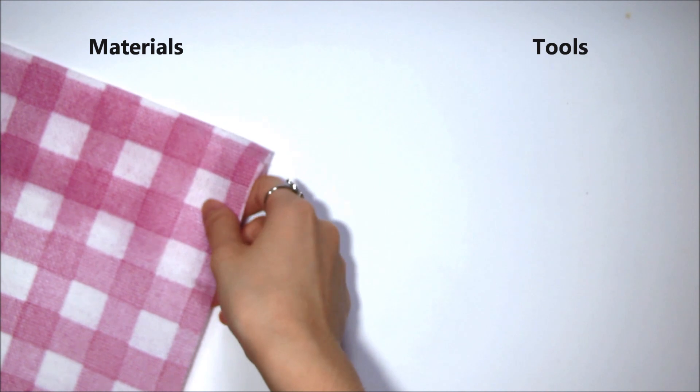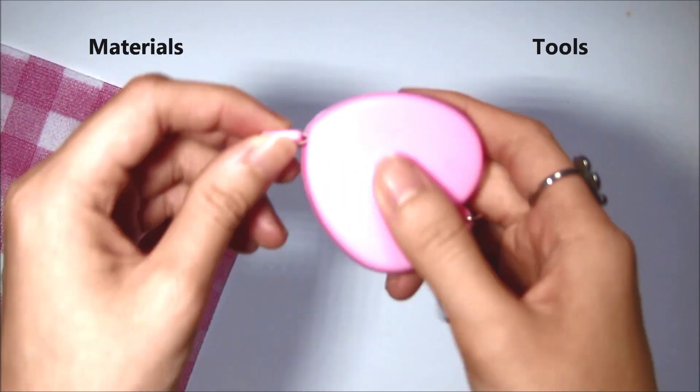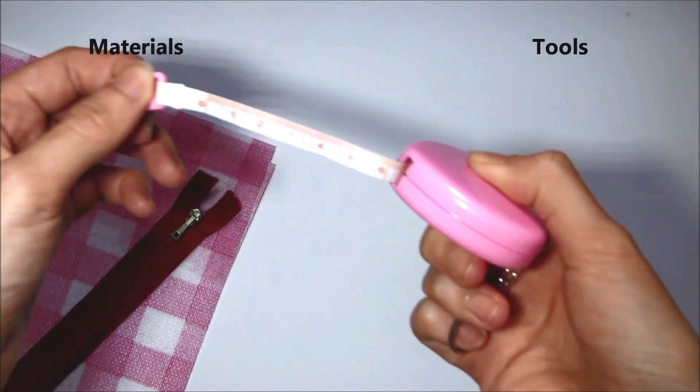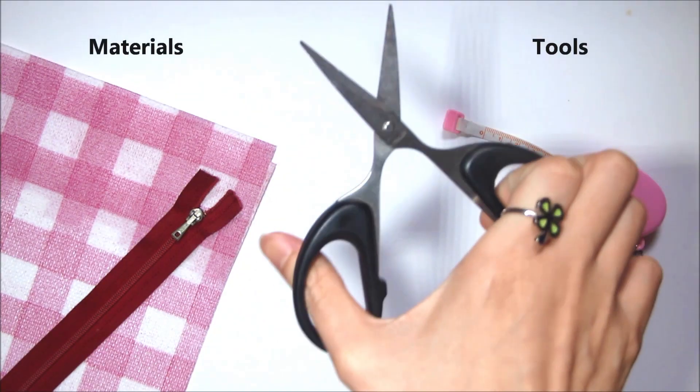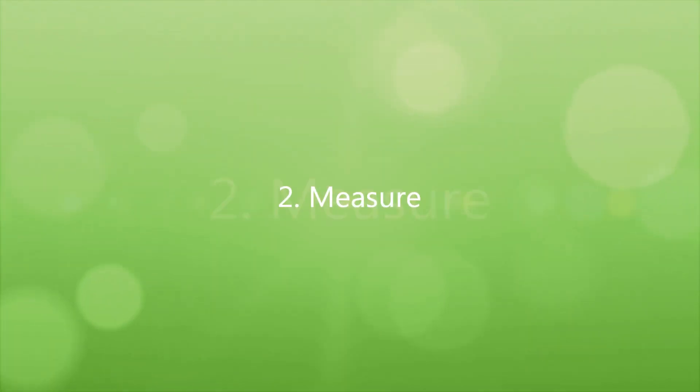Firstly, you'll need your fabric, a zip that is long enough, measuring tape, thread, scissors, fabric chalk, and probably a sewing machine.